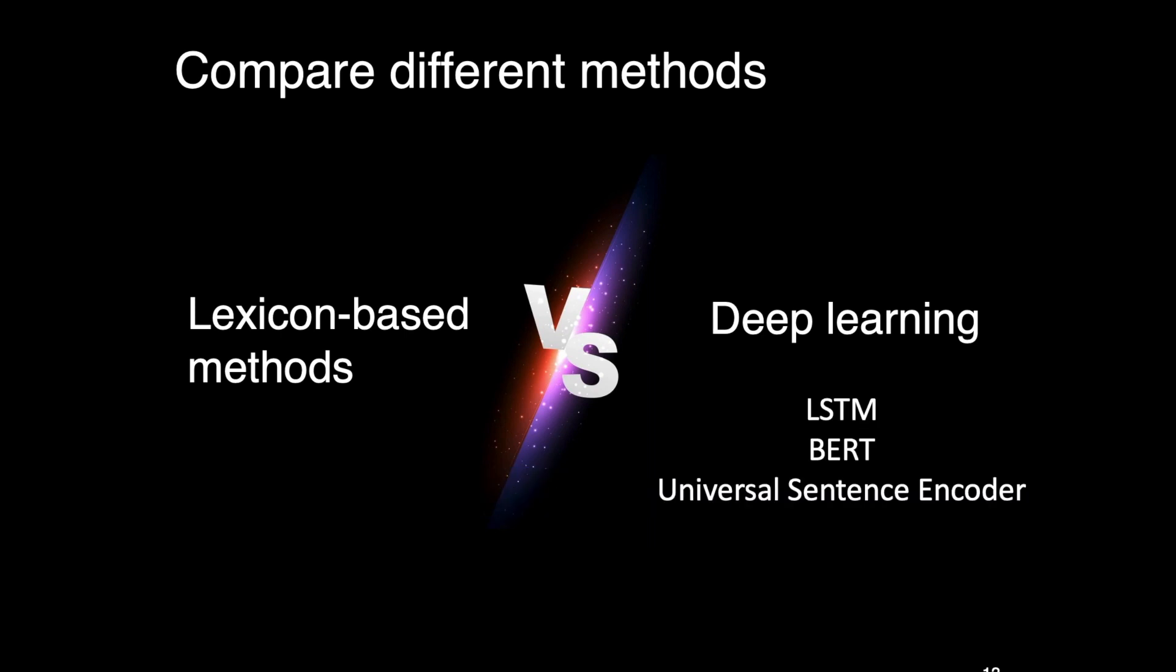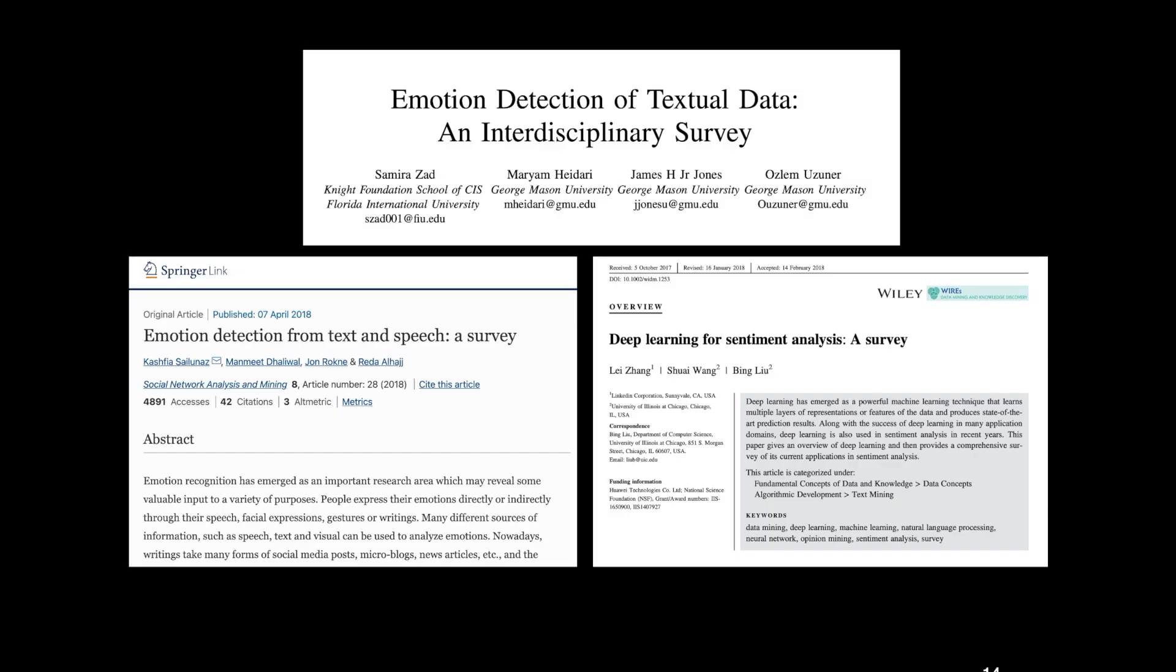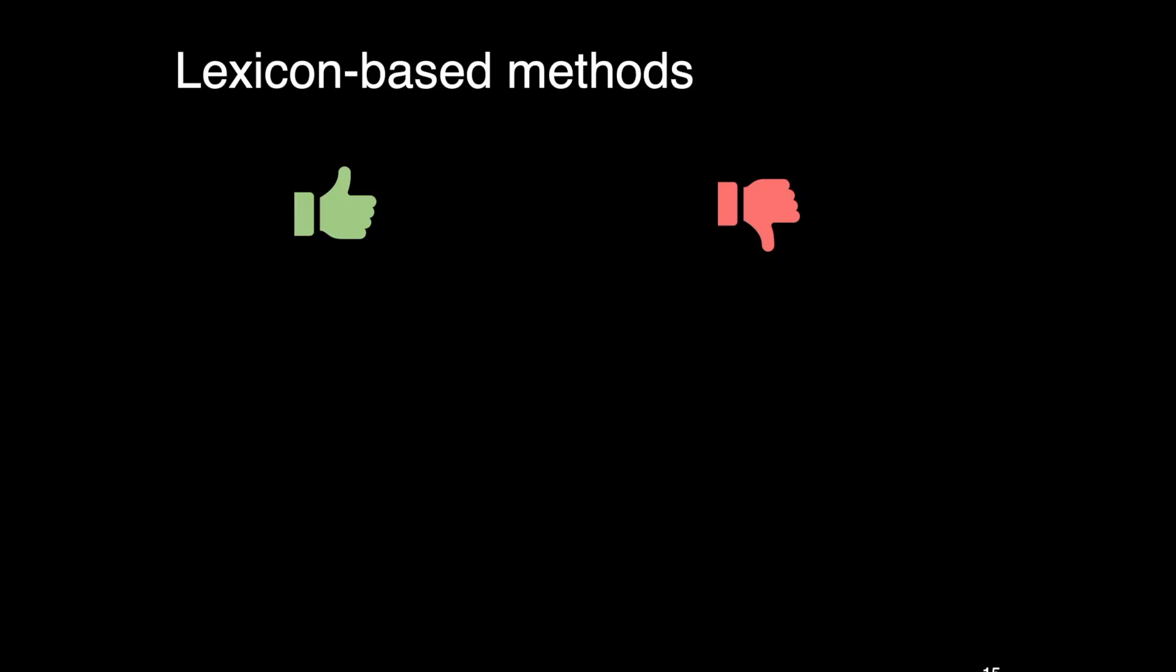Deep learning, on the other hand, include methods such as long short-term memory and BERT, which is short for bi-directional encoder representations from transformers, and universal sentence encoder. I encourage you to read the recently published survey papers to understand more about the deep learning methods.